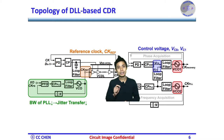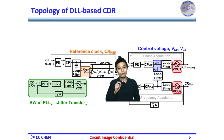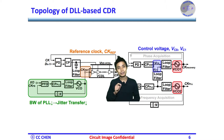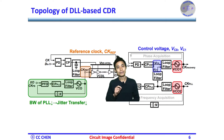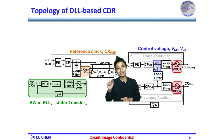The topology of the DLL-based CDR shown on the left-hand side is similar to the topology of the PLL-based CDR on the right-hand side. However, the frequency tracking loop provides a reference clock rather than the control voltage signal. Also, the DLL-based phase tracking loop uses a voltage-controlled delay line (VCDL) for phase synchronization instead of a VCO in the PLL-based CDR. The reference clock of the VCDL must match the input data rate and is typically generated from a shared PLL-based clock multiplication.